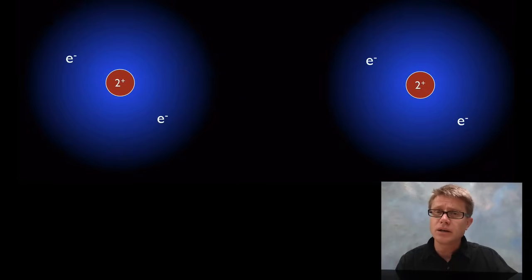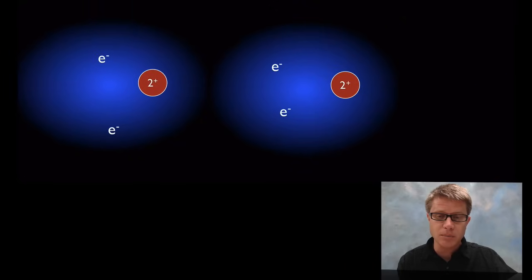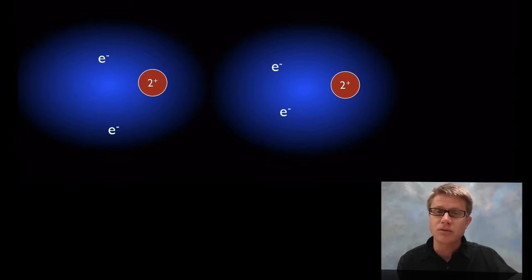So right here I have two helium atoms. And so they're going to have two protons on the inside, two electrons on the outside. And so as we move them close together, watch what happens to their electrons. Let's watch that again. As they move close together the electrons are going to migrate.